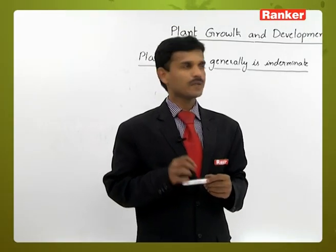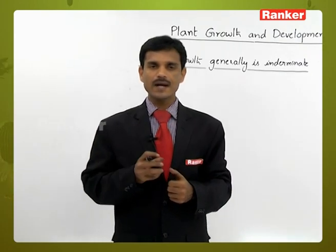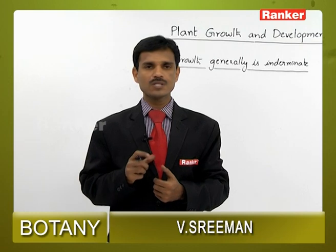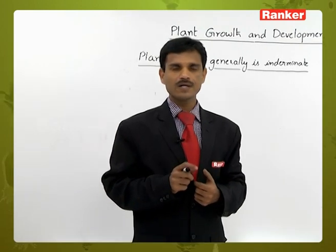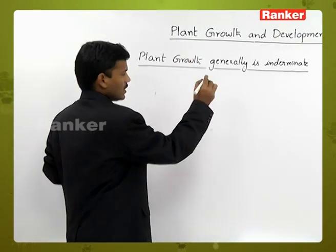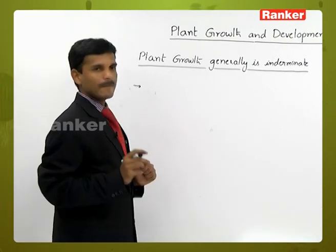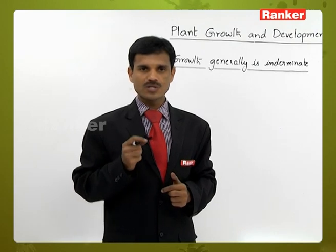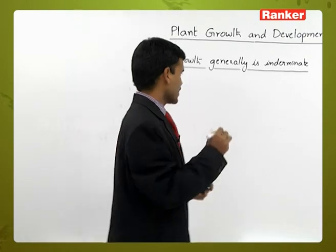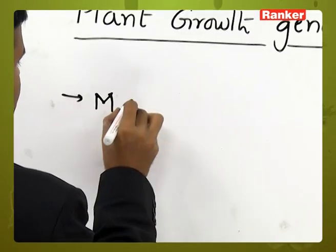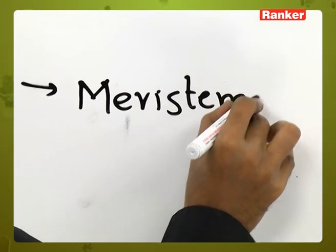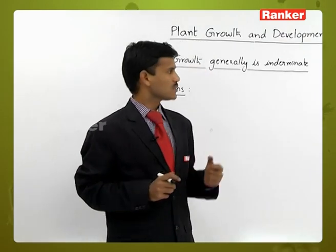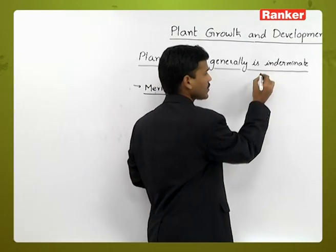In plants, the growth is indeterminate — indeterminate means unlimited. In all organisms, growth is generally observed, but only in plants is the growth unlimited. This is not the case in animals. The unlimited growth in plants is due to the meristematic tissues, which have the ability to produce new cells continuously. The meristems present in the plant body at different locations are responsible for this continuous, indeterminate growth.